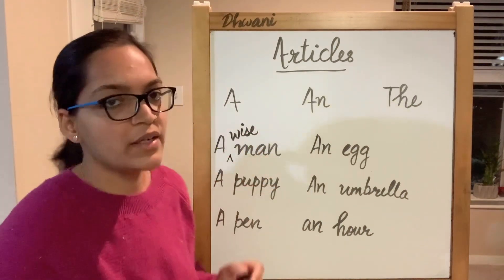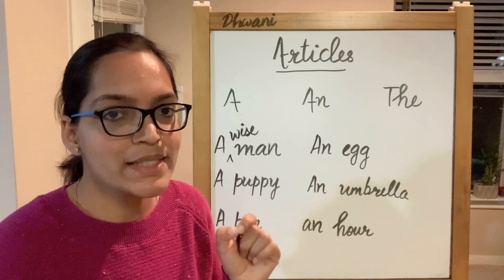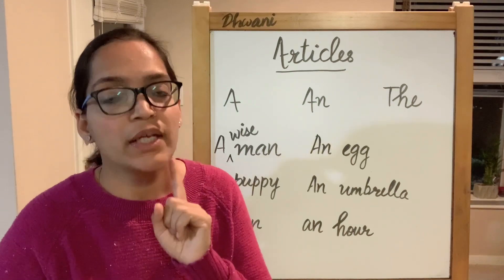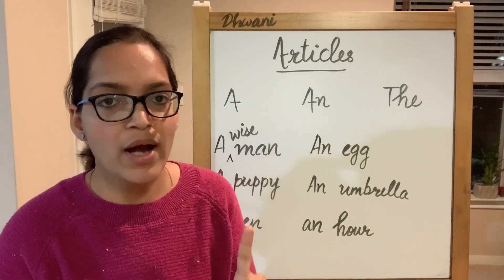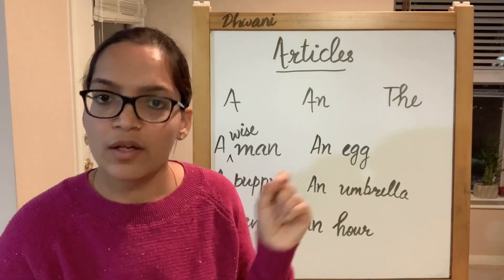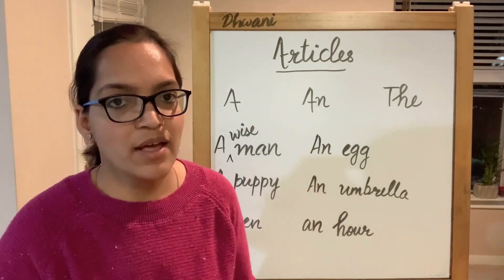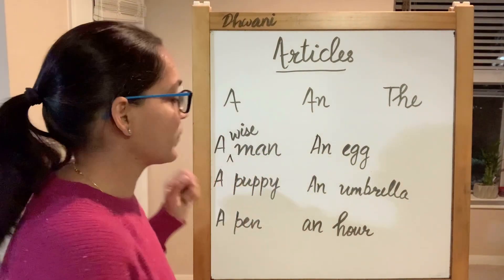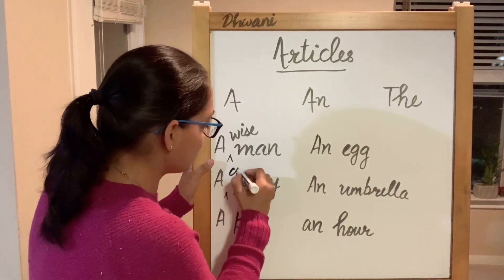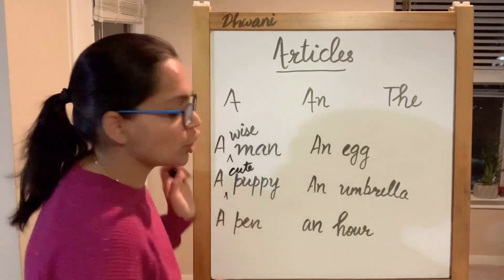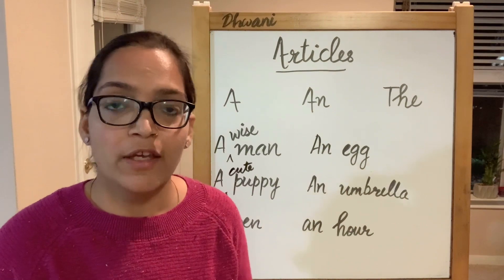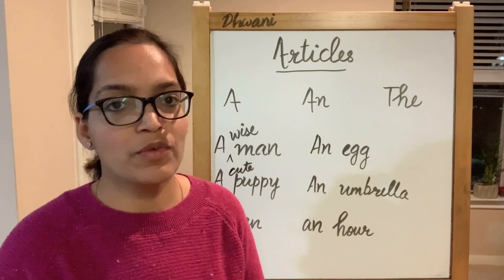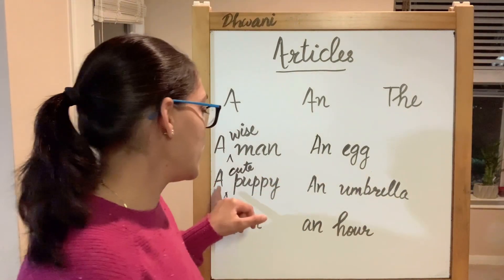So I'm saying 'a wise man' — we are talking about a single wise man. The adjective 'wise' has a consonant sound, so we use a. Same goes for 'a cute puppy' — cute is the adjective describing the noun. It begins with a k sound, which is a consonant sound, so we say 'a cute puppy.'